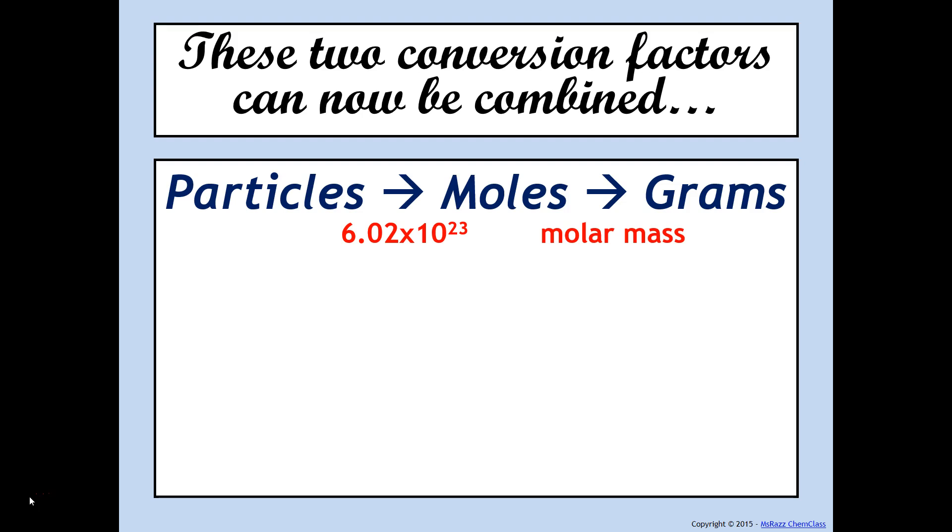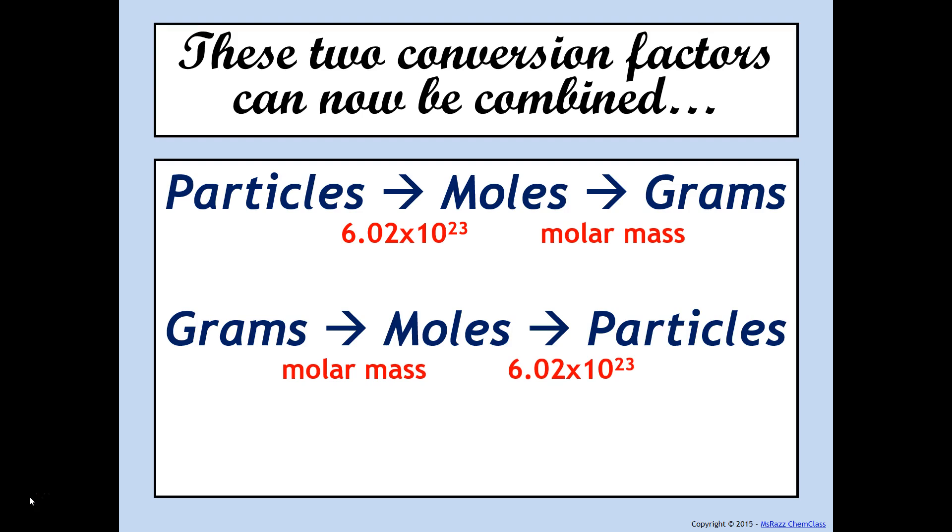Conversely, you could go in the opposite direction. So for example, maybe a problem gives you the mass of something and it asks you to go into particles. We'll do the same thing. In order to go from grams into moles, we're going to use the molar mass. In order to go from moles into particles, we're going to use 6.02 times 10 to the 23rd.